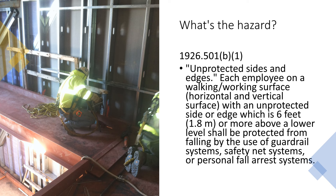The OSHA regulation states — unprotected sides and edges: each employee on a walking-working surface, horizontal and vertical surface, with an unprotected side or edge six feet or more above a lower level shall be protected from falling by the use of guardrail systems, safety net systems, or personal fall arrest systems. This is as basic as it gets. The fix is easy — use the proper fall protection that you were given. I do not see this as an employee behavior problem. This is a failure in the system.